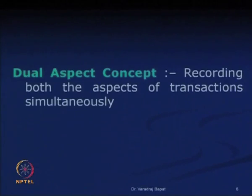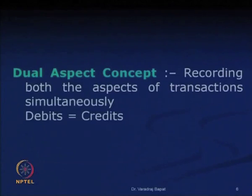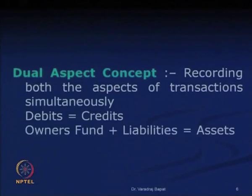The next is the dual aspect concept. In the dual aspect concept, both aspects of transactions are recorded separately. In accounting terminology, they are known as debits and credits, and debits should be equal to credits.